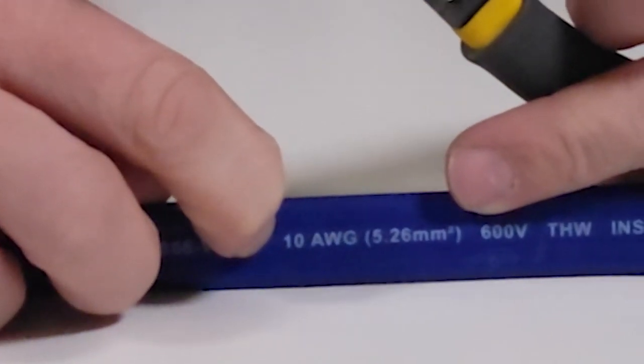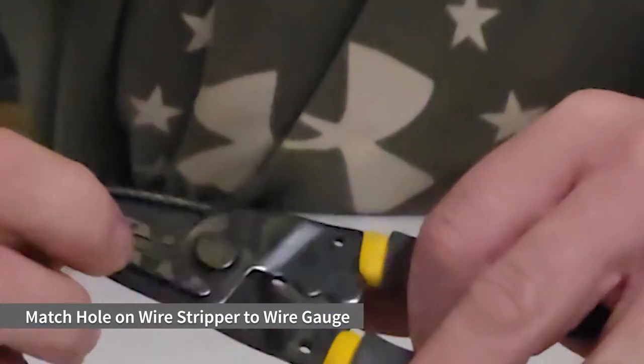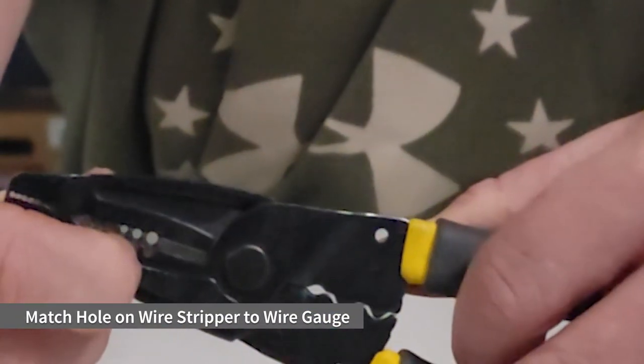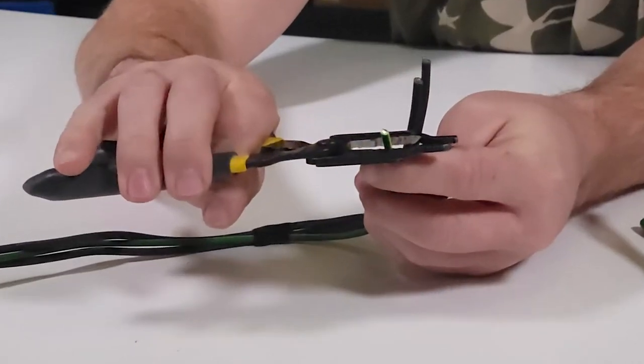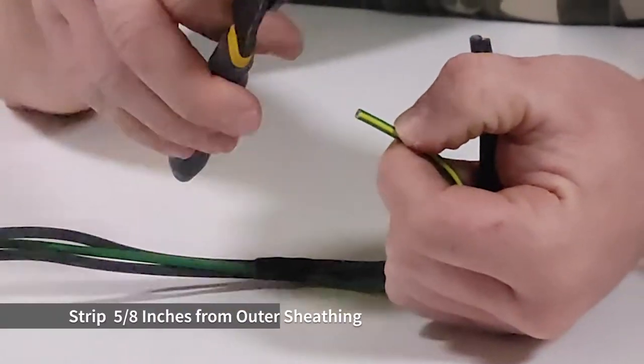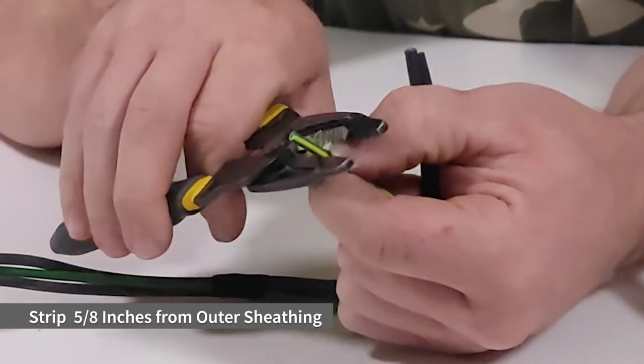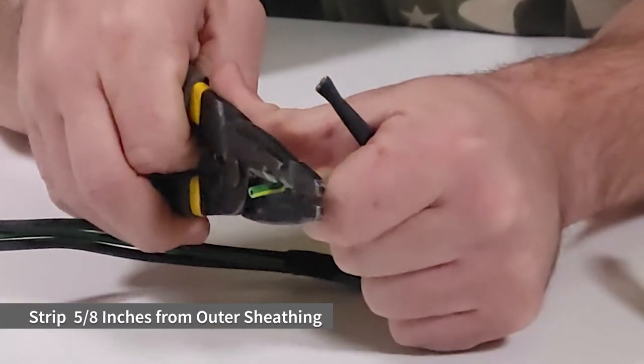Using wire strippers, strip each wire 5/8 inch to expose the copper. We're using 10 gauge wire in this video, so use the 10 gauge hole marked on your wire stripper. Simply crimp down and pull to remove the outer layer.